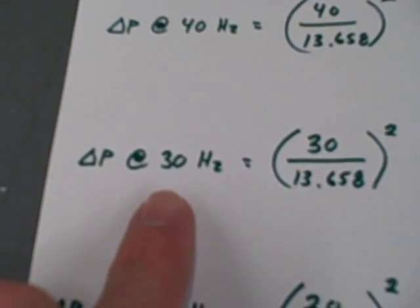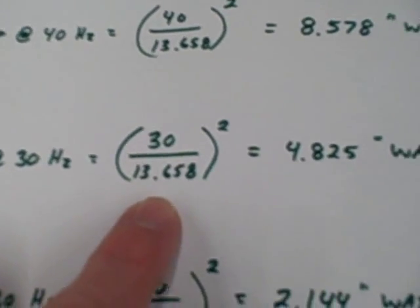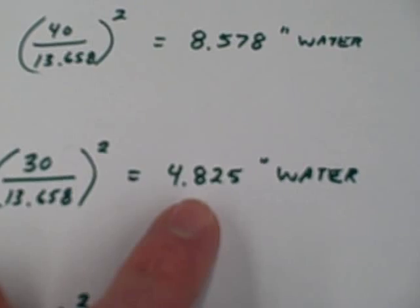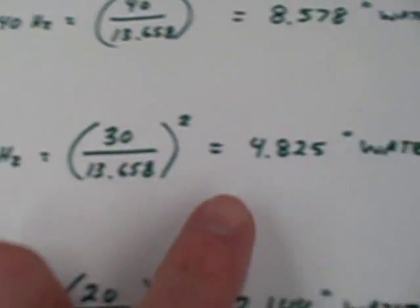Moving down to our next test point, we're going to lower the motor frequency to 30 hertz. Using the k-factor we calculated previously, we calculate a differential pressure of 4.825 inches of water. So we're going to decrease the motor speed to 30 hertz and see how close to that value we get.